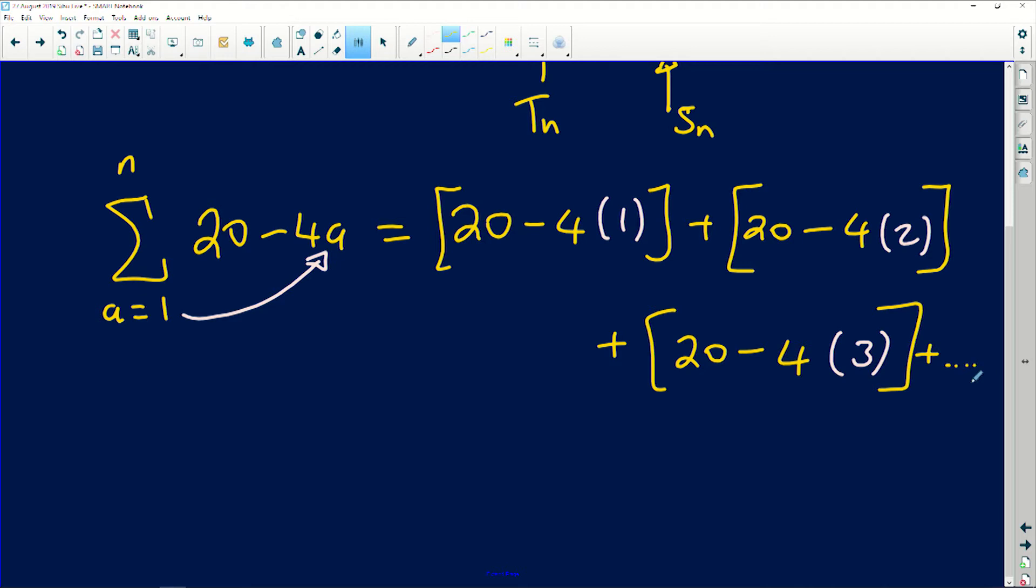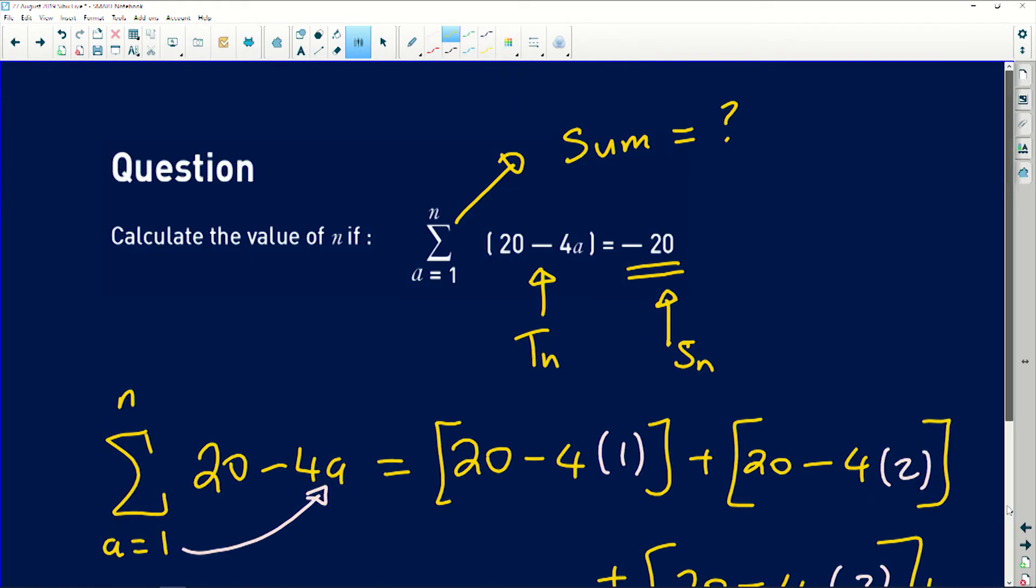So if you simplify, 20 minus 4 will give you 16 plus 20 minus 8 will give you 12 plus 20 minus 12 will give you 8, and this continues and so on. But we know that the sum is actually equal to negative 20 because we were told in the question that this sum equals negative 20.